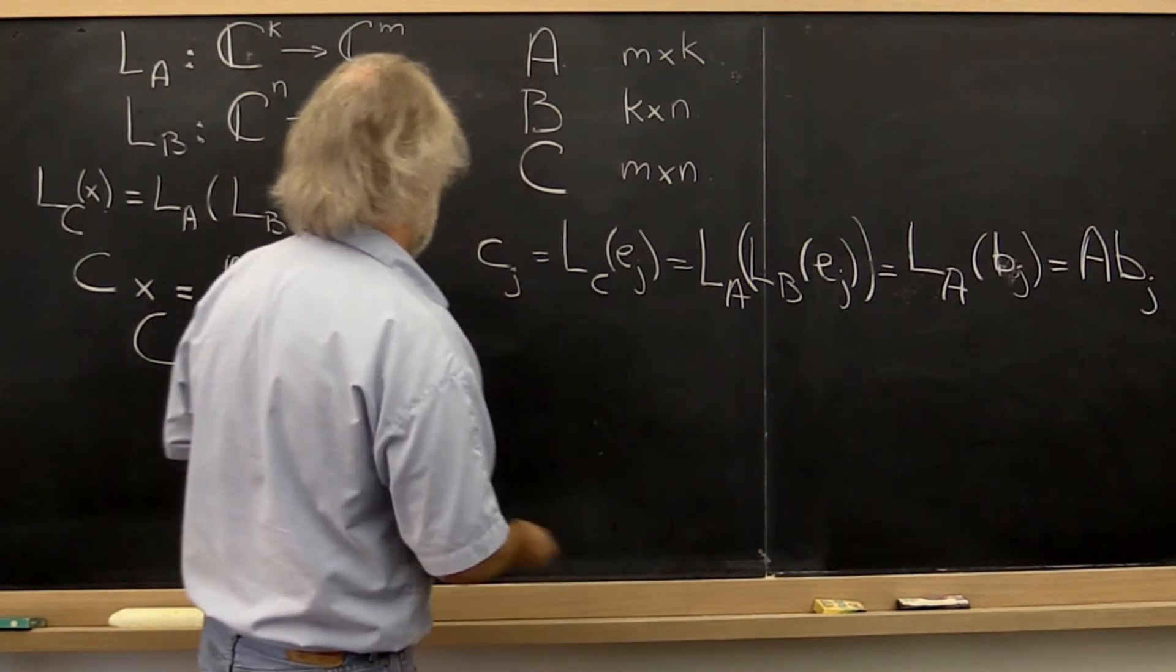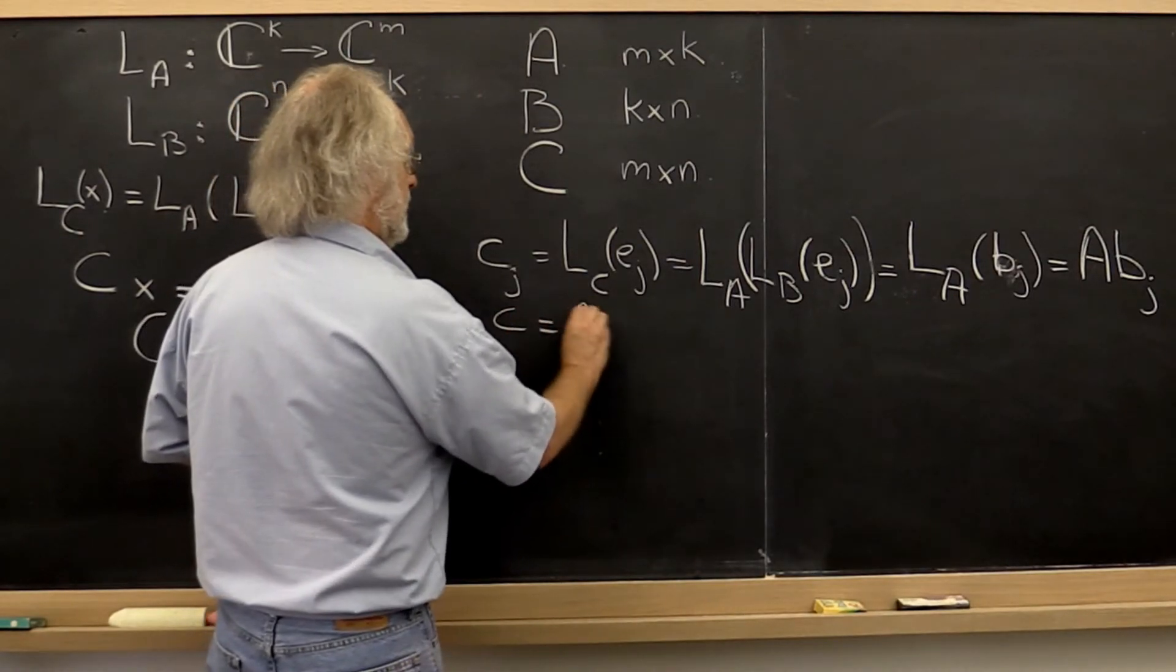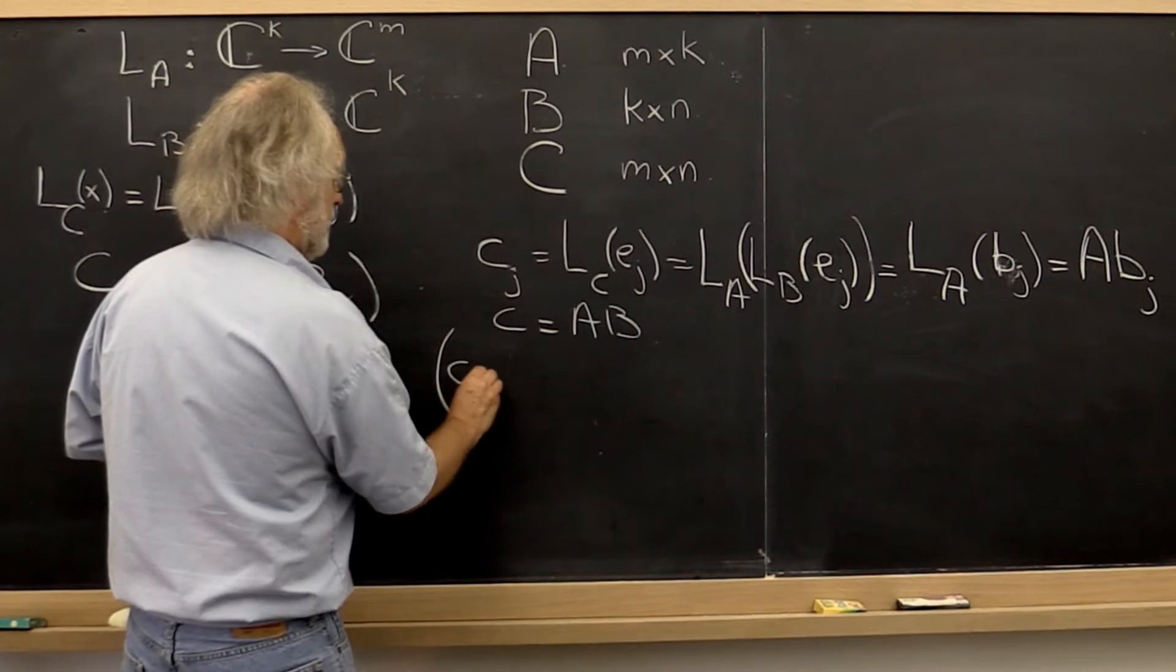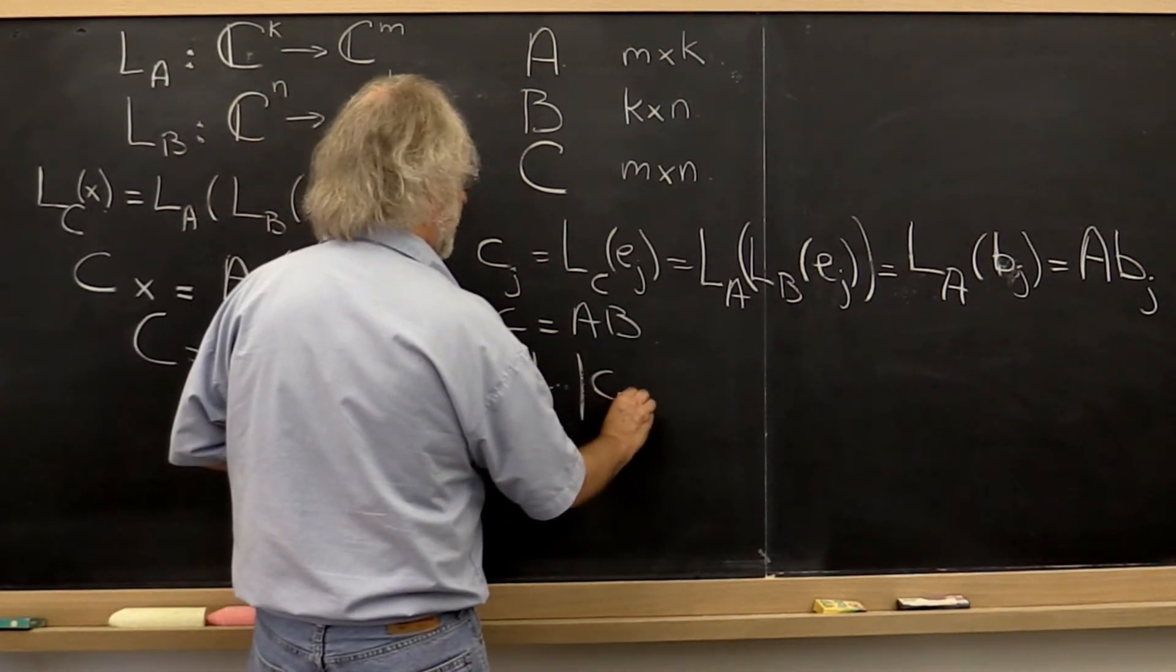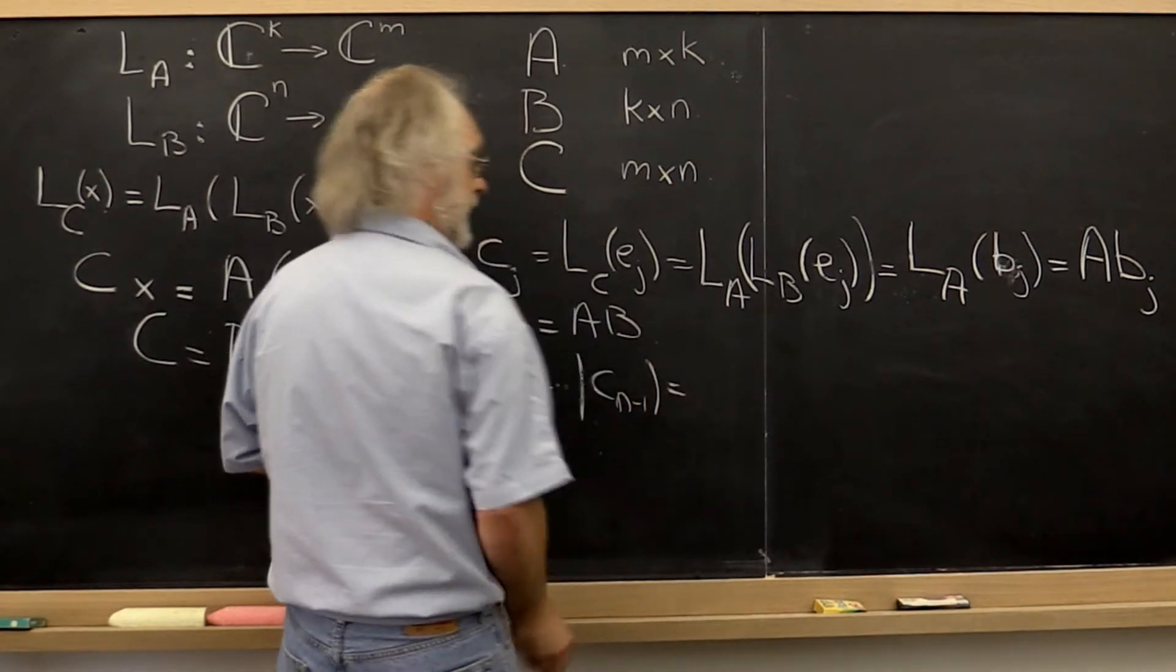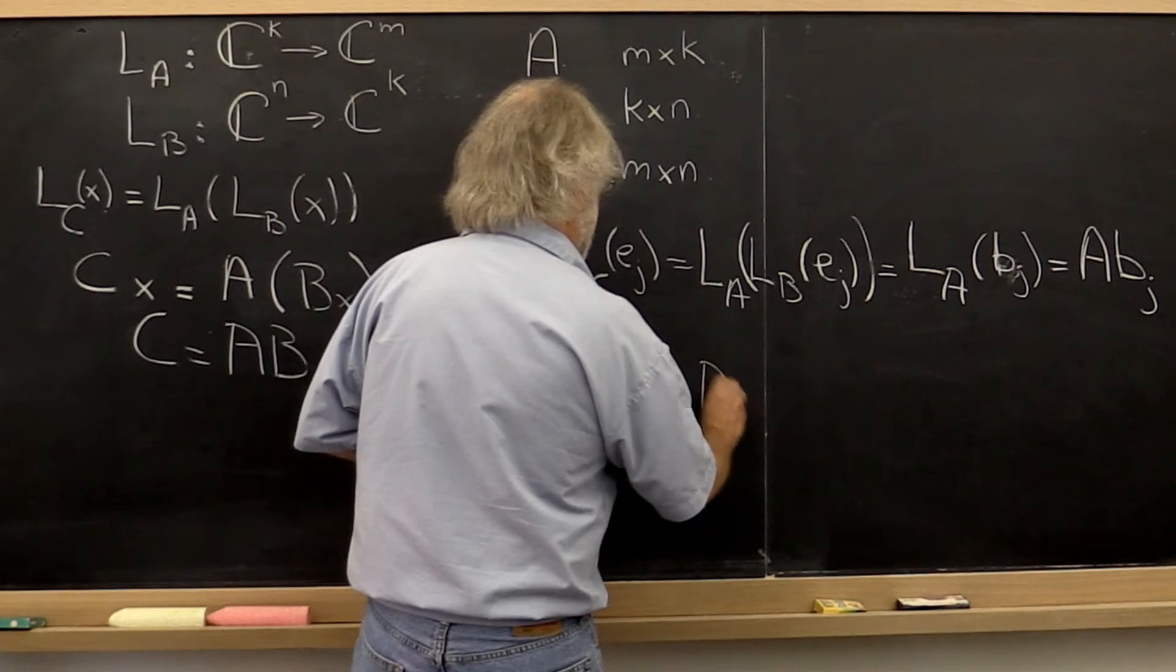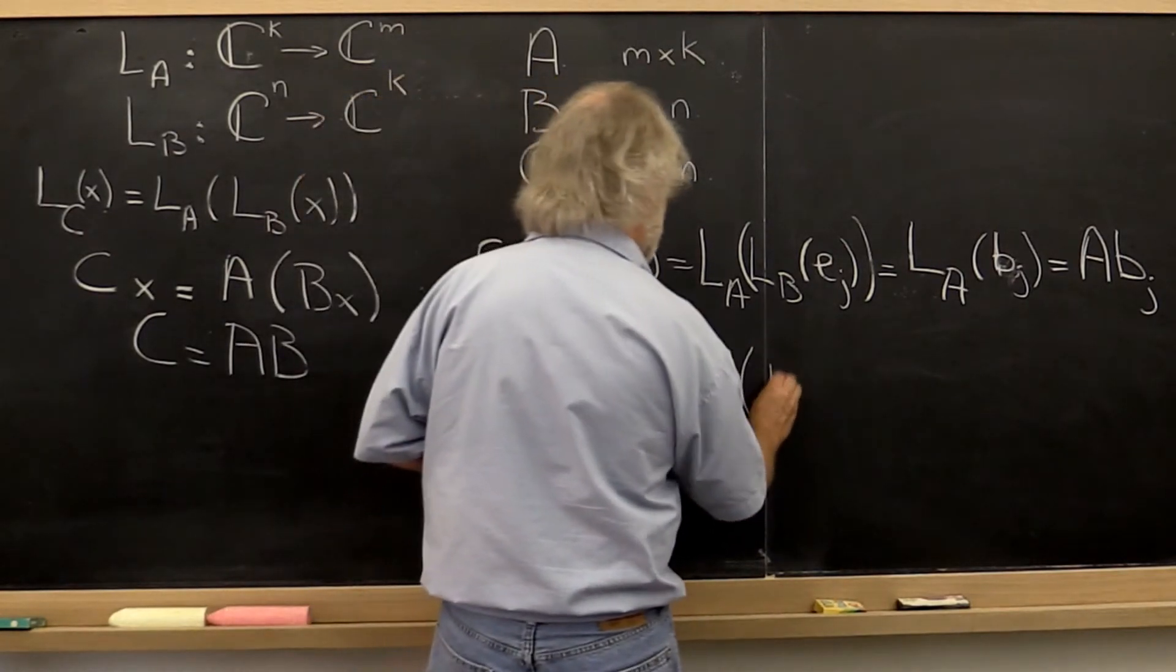So what do we learn? If we take C and we compute it as A times B, then you can think of C as consisting of its columns, or n of those. And you can then think of that as A times B. But now we can partition B by its columns.